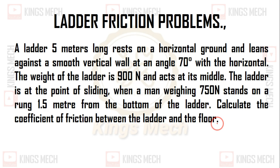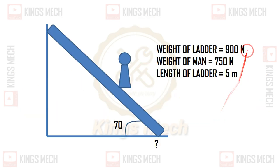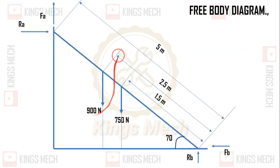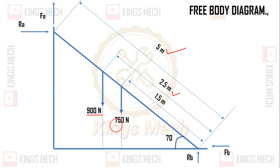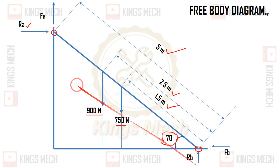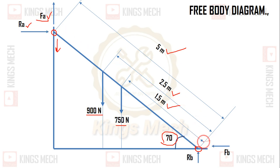We can solve this problem in a very easy manner. The total weight of the ladder is 900 Newton acting at the middle, which is 2.5 meters. The man weighs 750 Newton at 1.5 meters from the bottom. The vertical reaction at the floor is RA and the horizontal reaction at the wall is RB. Friction FA acts at the base of the ladder.